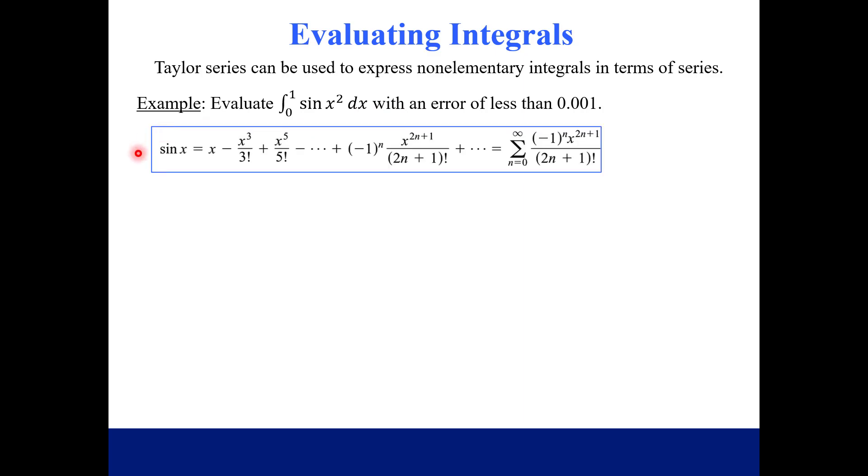We are going to use our known Taylor series for sine of x. Even though we're working with sine x squared, we're just going to modify our known Taylor series. Everywhere there's an x, we just replace it with x squared in our original Taylor series. Then you just start simplifying. Notice what you have, for example, we had x squared quantity cubed, so now this term has an x to the sixth in it. I did write out what these factorials equal.